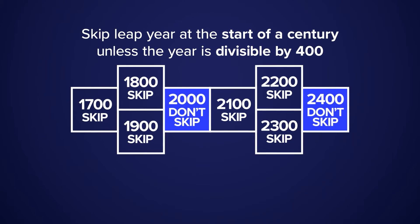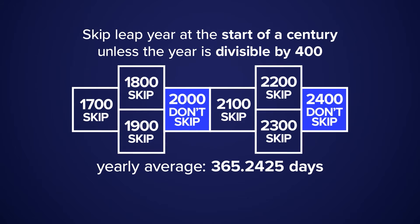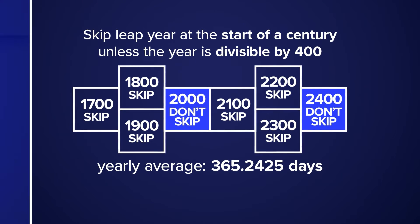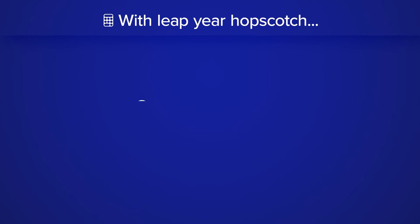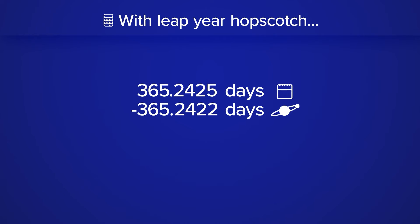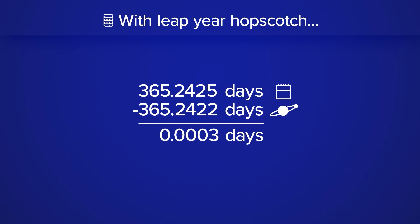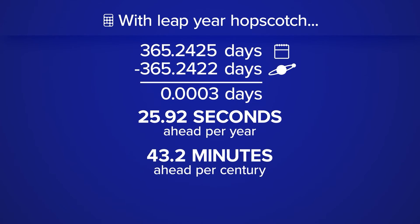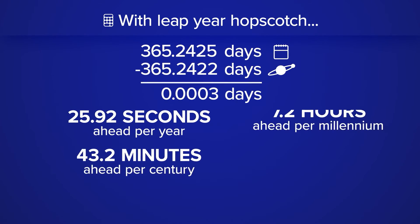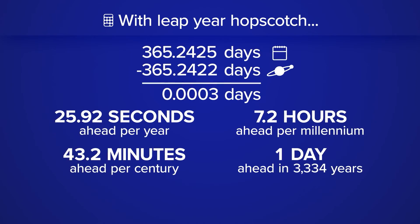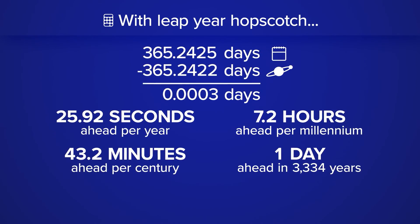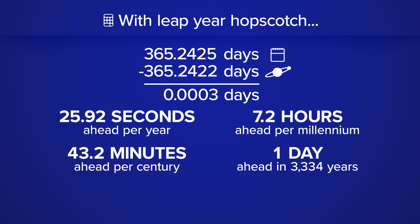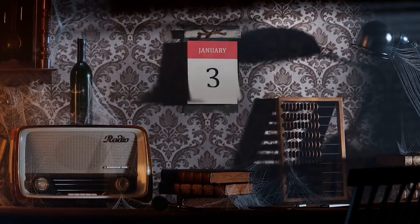It takes a minute to wrap your head around it, but with this added solution, the current average is 365.2425. Unfortunately, we're still off by decimals — to be exact, about 26 seconds ahead each year. At this rate, it would take over 3,000 years to be off by one day, which some would say is close enough.